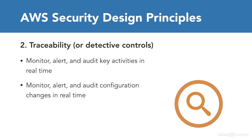Another aspect is to monitor, alert, and audit configuration changes — again, ideally in real time. This applies to instances of key services and servers such as EC2 and RDS. The third aspect is to automate responses to alarms. For example, if you have a Kinesis stream get into an overflow state, you'd want an immediate alarm, ideally with a remediated action.